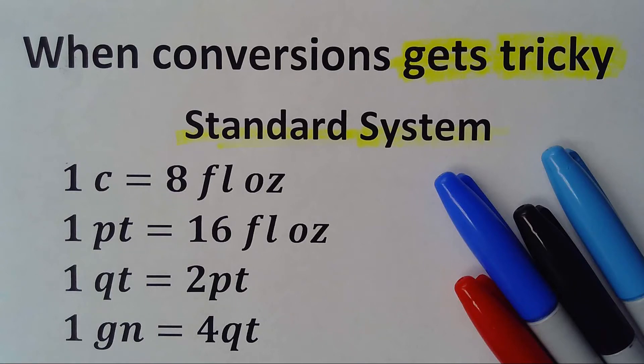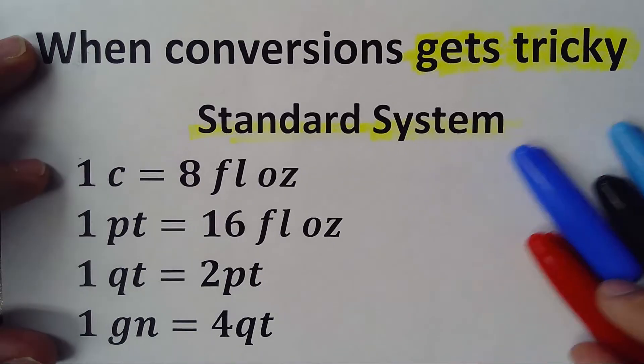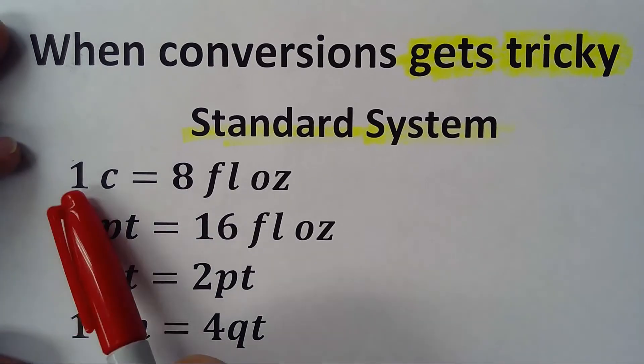We're going to work today on conversions. There are some examples when we're talking about cups and gallons - there are a lot of challenging conversions here when we're talking about capacity. We have here that one cup equals eight fluid ounces, one pint equals 16 fluid ounces.